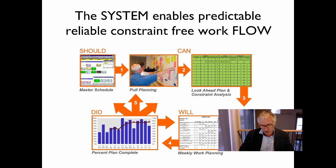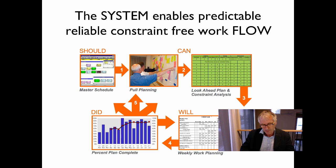Teams that adopt lean production systems are better able to plan and coordinate work, engage people to a higher level of commitment, and get work done in less time and with fewer resources. Last Planner System summary: there is a failure rate of 54% in planned work on traditional projects, and the Last Planner System helps to fix that.